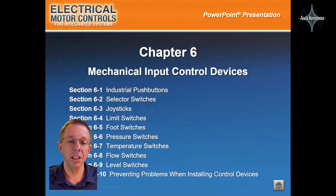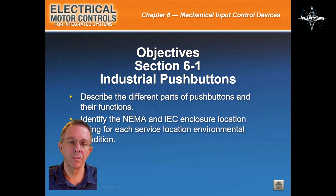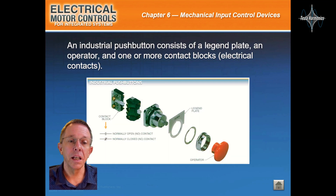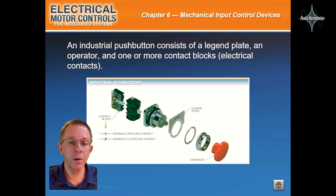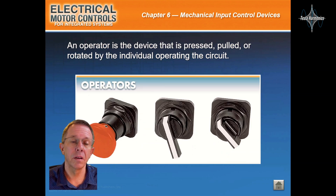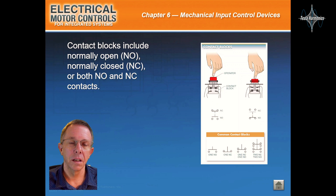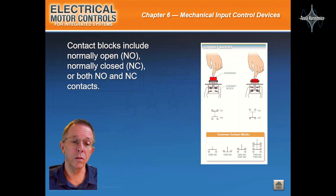Let's take a look at Chapter 6: Mechanical Input Control Devices. An industrial pushbutton consists of a legend plate, an operator, and one or more contact blocks or electrical contacts. An operator is the device that is pressed, pulled, or rotated by the individual operating the circuit. Contact blocks include normally open, normally closed, or both normally open and normally closed contacts.